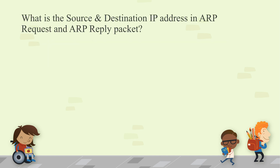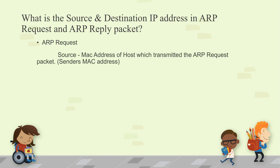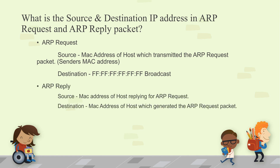What is the source and destination address in an ARP request and ARP reply packet? In an ARP request, the source address is the MAC address of the host transmitting the ARP request. The destination is FF:FF:FF:FF:FF:FF — the broadcast MAC address. In an ARP reply, the source address is the MAC address of the host replying to the ARP request, and the destination is the MAC address of the host that generated the ARP request packet.